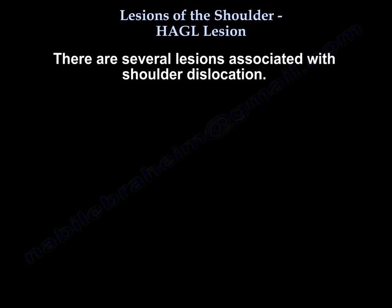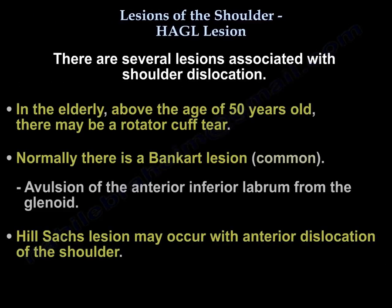You can get several lesions in dislocation. In the elderly, above the age of 50, you may get a cuff tear. Normally, you get a Bankart lesion, which is common — which is avulsion of the anterior inferior labrum from the glenoid. With anterior dislocation of the shoulder, you can also get a Hill-Sachs lesion.